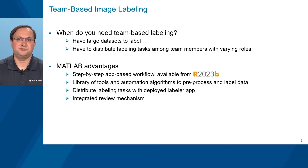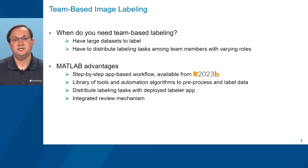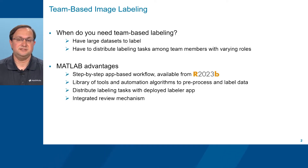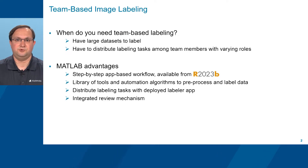Labeling image data for supervised learning is a crucial step in the machine learning operations pipeline. This process becomes particularly challenging as labeling projects scale, as large volumes of data need to be spread across many human annotators. Organizations face challenges in how to manage large labeling projects, enforce data access and privacy policies, and find cost-effective solutions that meet the needs of their workforce.